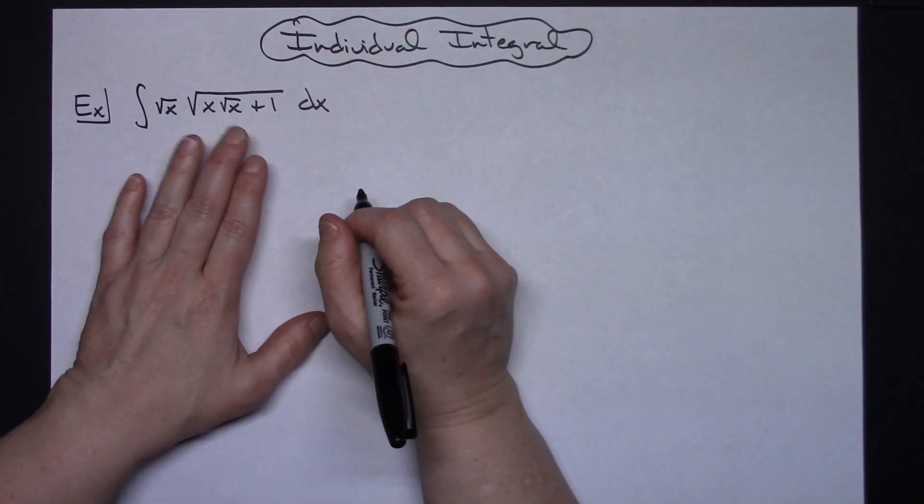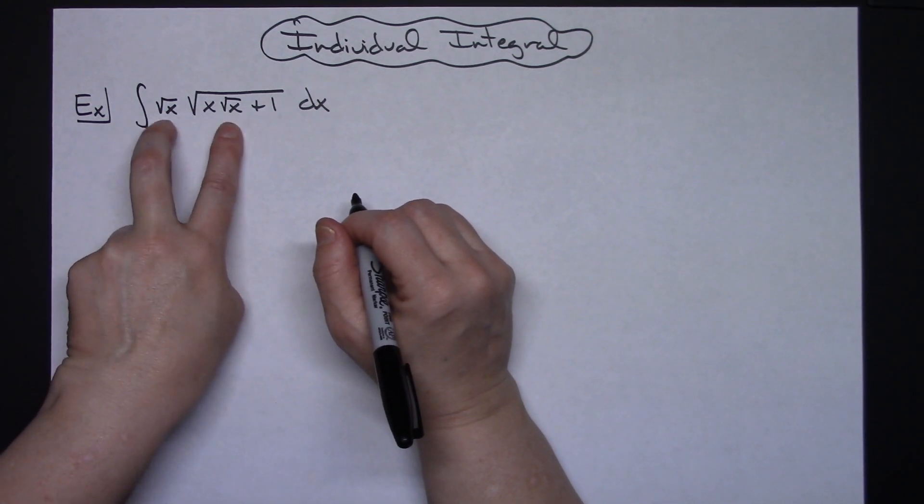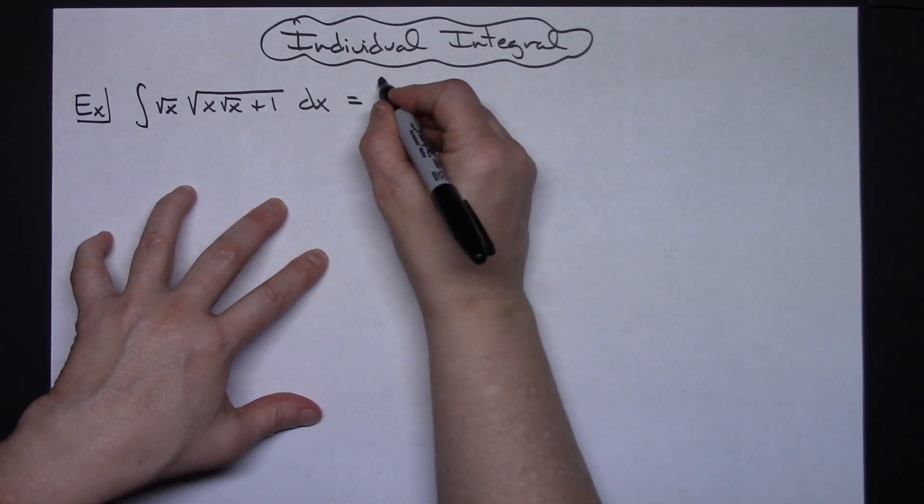So the first thing I'm going to do is I'm going to take these two little square roots and I'm going to write them in exponent form. I think we'll go across to do that.